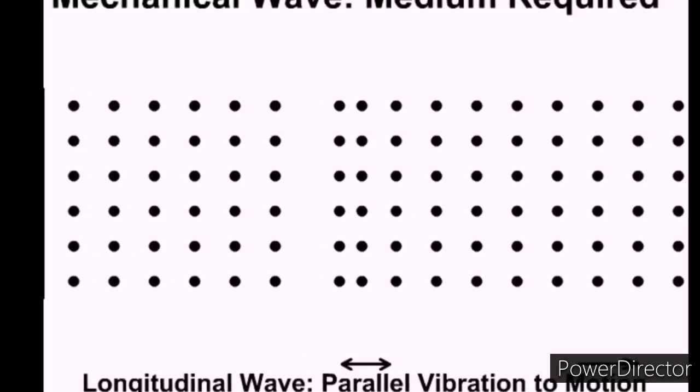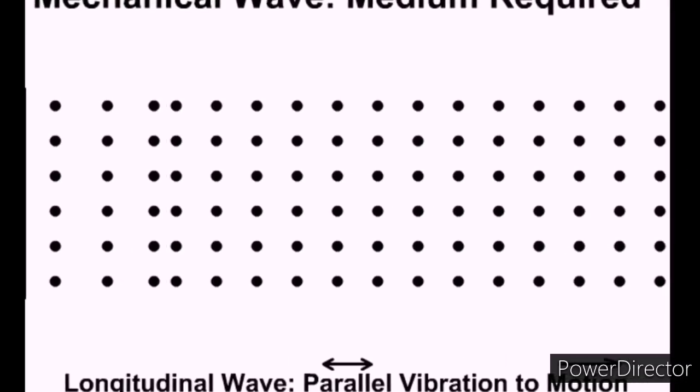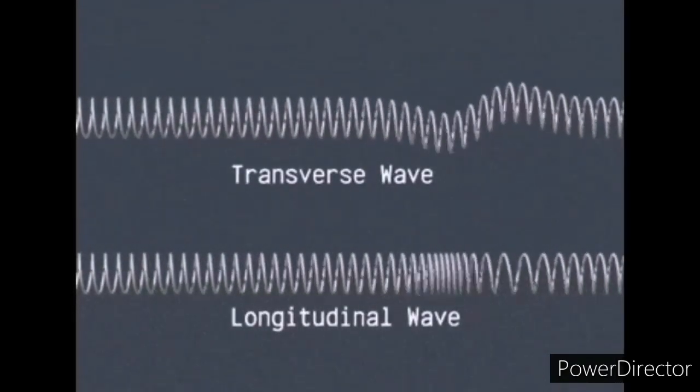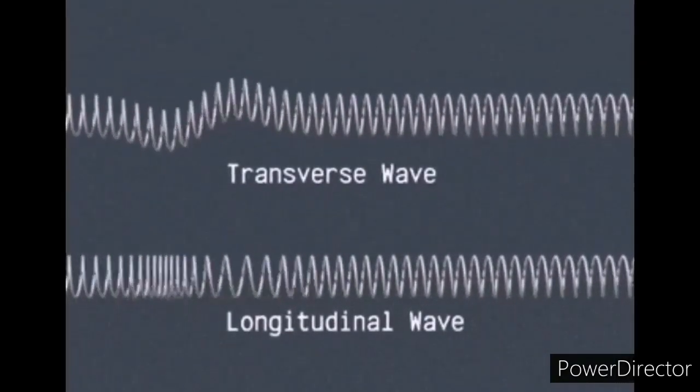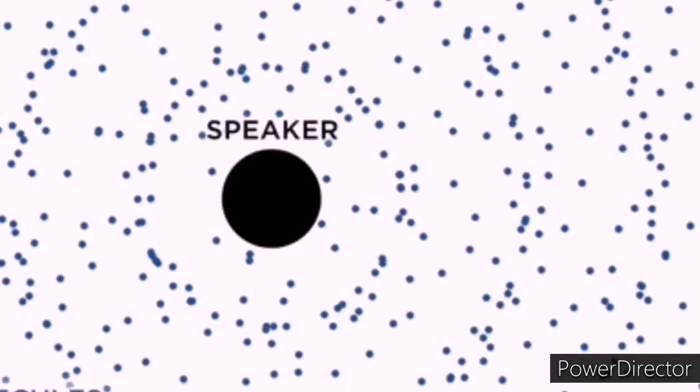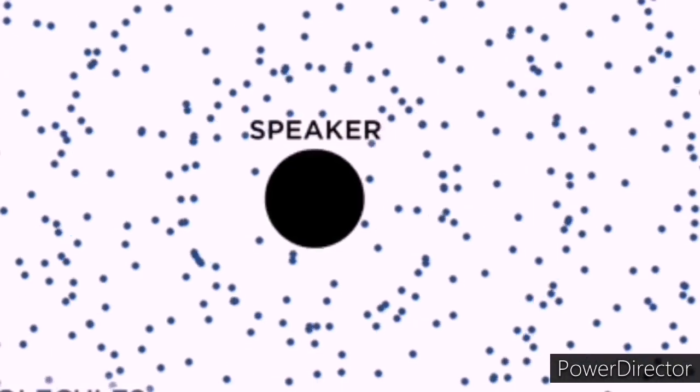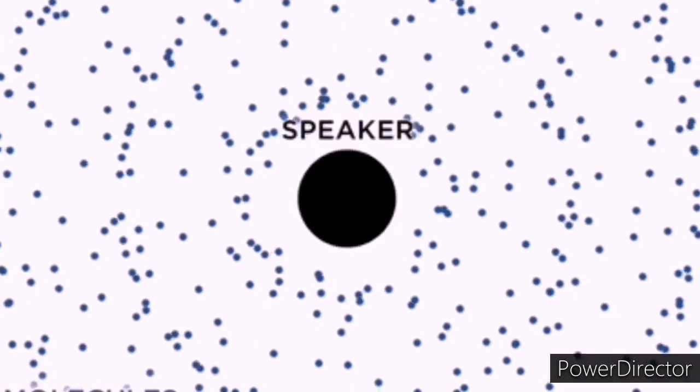Sound can propagate through a medium such as air, water, and solids as longitudinal waves and also as transverse waves in solids. The sound waves are generated by a sound source such as a vibrating diaphragm of a stereo speaker. The sound source creates vibrations in the surrounding medium.